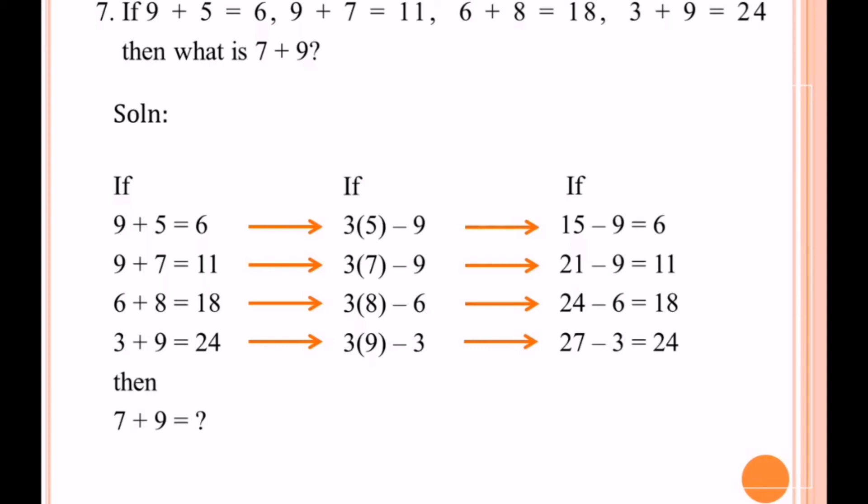So this time we can solve the 7 plus 9 by multiplying 9 by 3 and subtracting it from 7. Our final answer is 27 minus 7 equals 20.